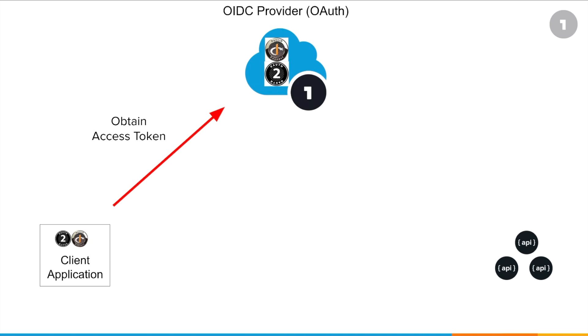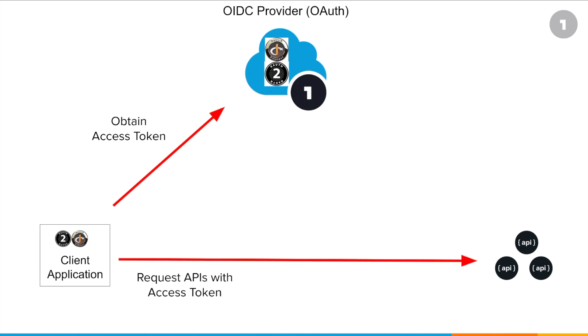Having obtained this access token, the client application would then send it as a bearer token to the target APIs in order to gain authorized access to those APIs.